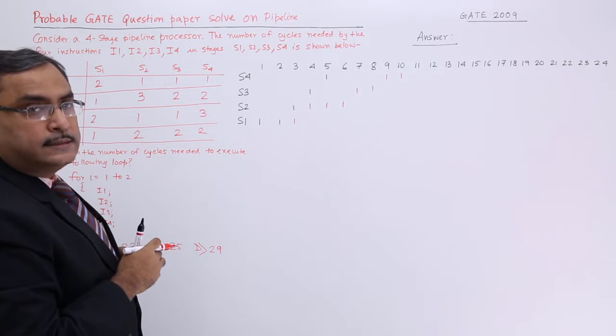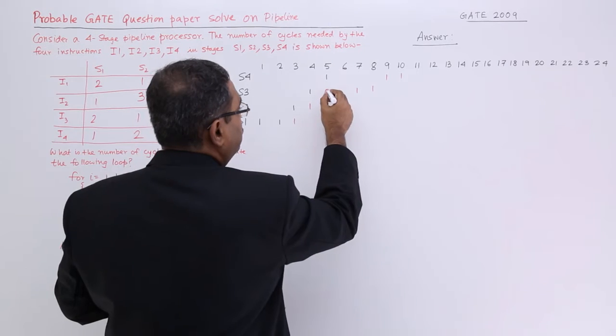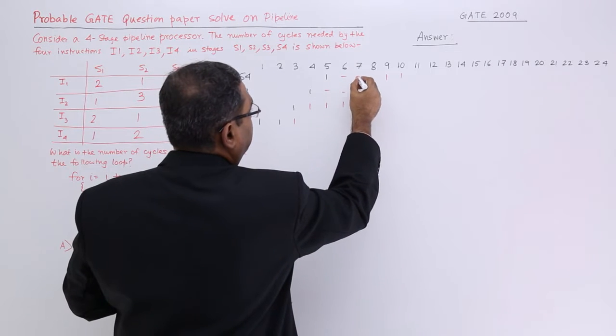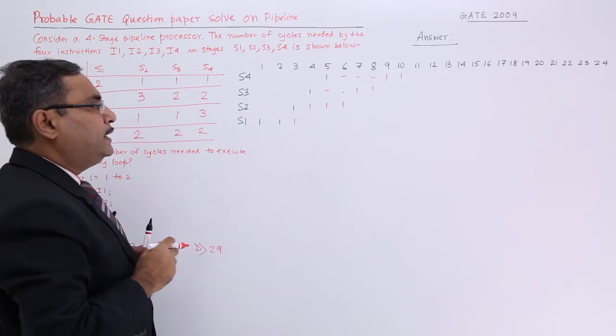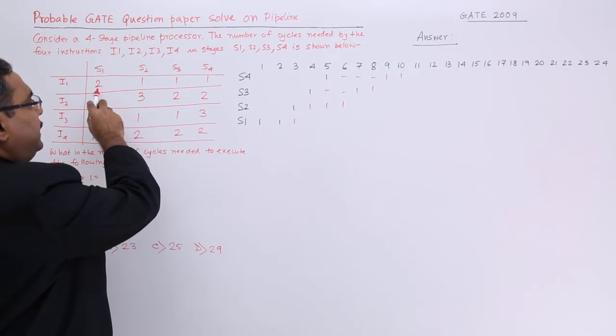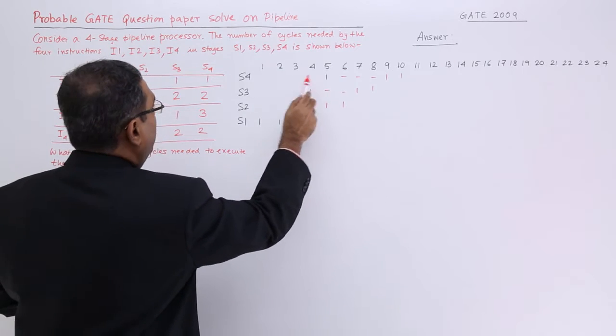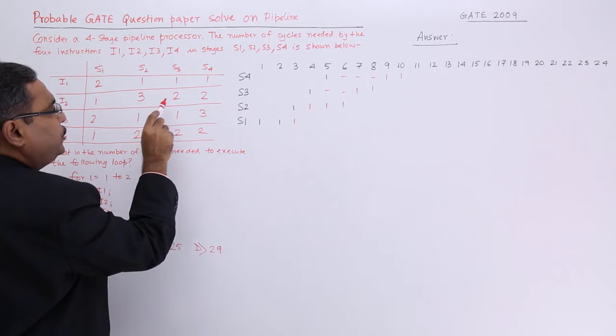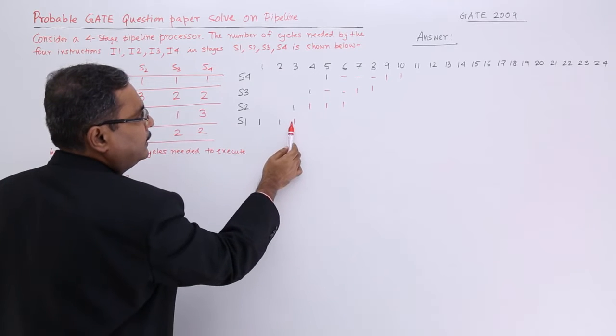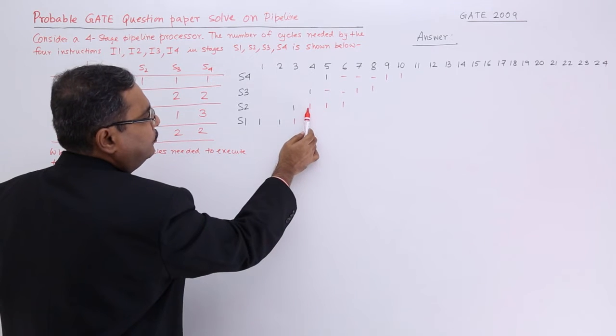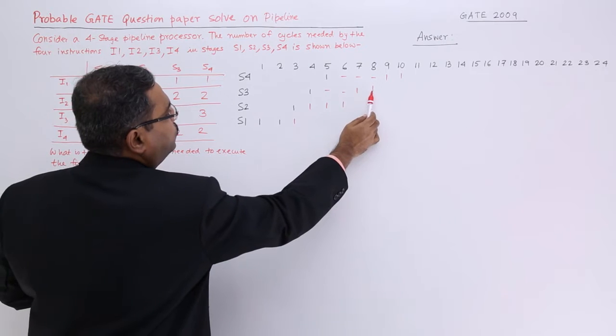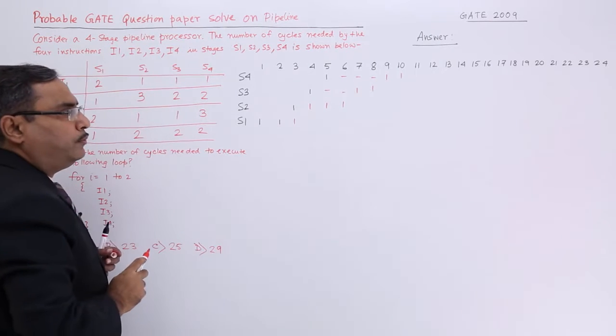It will come like this and there will be so many pipeline stalls. Let me do it again: 2, 1, 1, 1. It will have 2, then 1, then 1, then 1. It will have 1, 3, 2, 2. After finishing this one, then 1, then 3, then I shall for 3: 1, then 2, and then 2. In this way it will go.